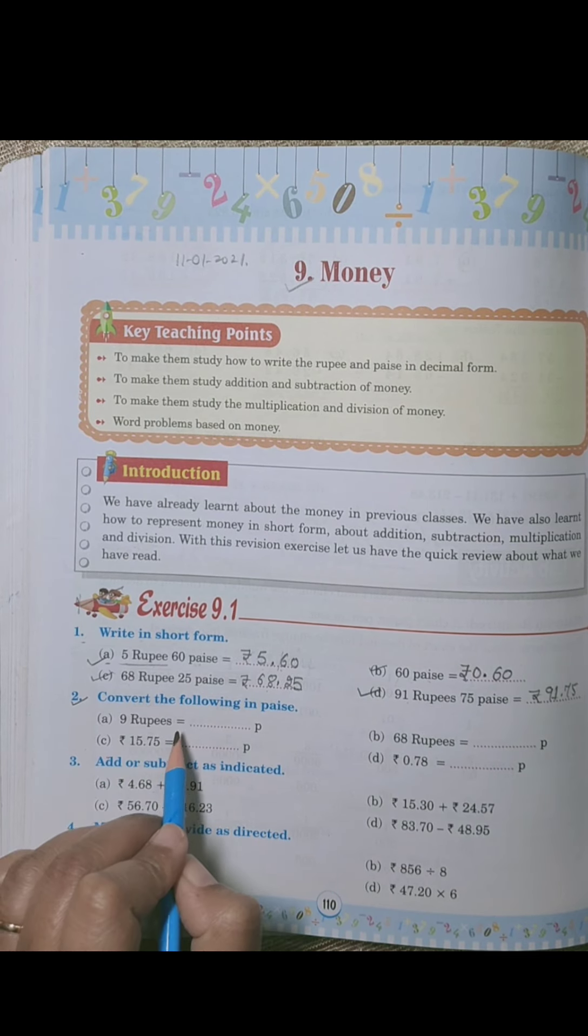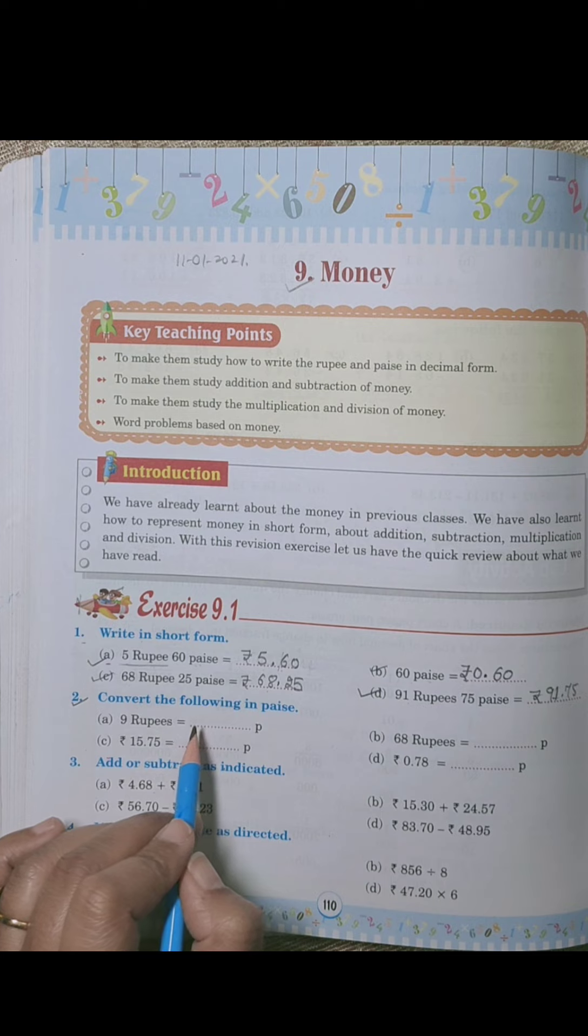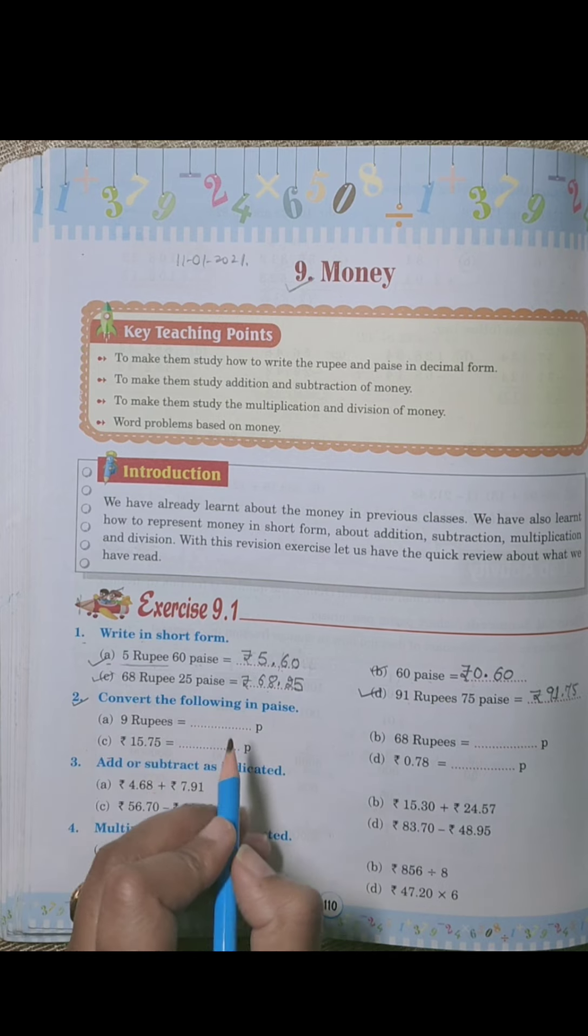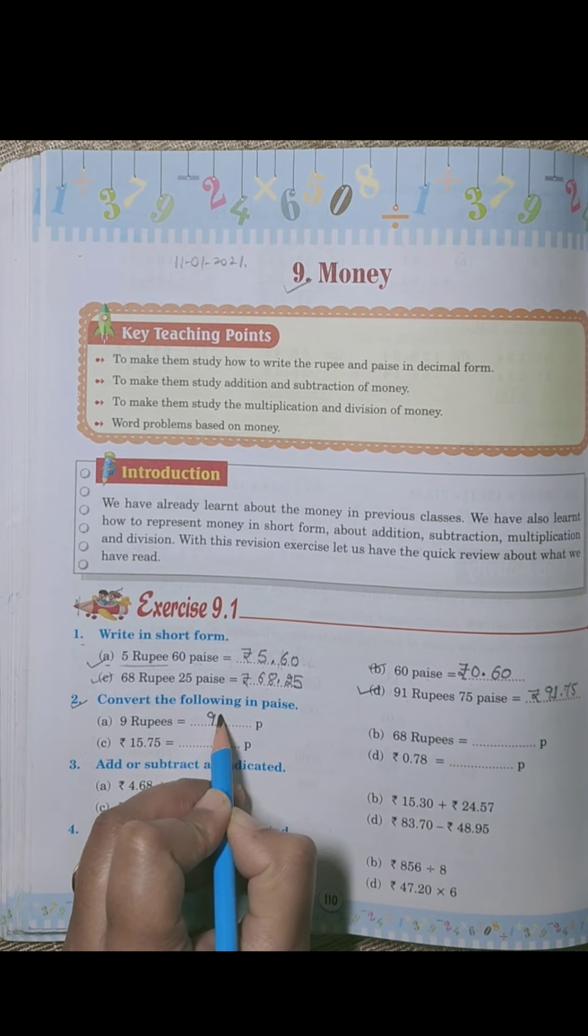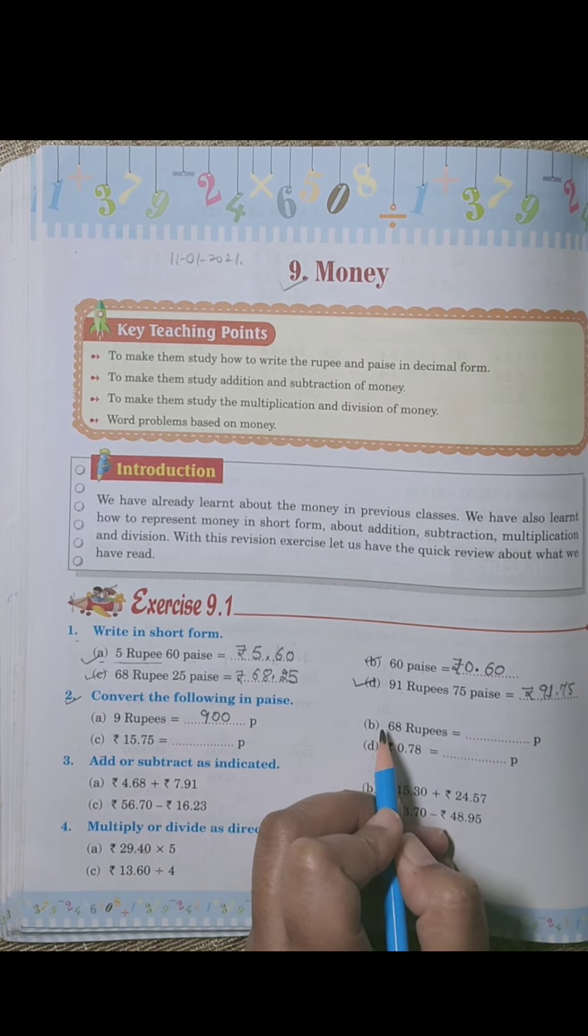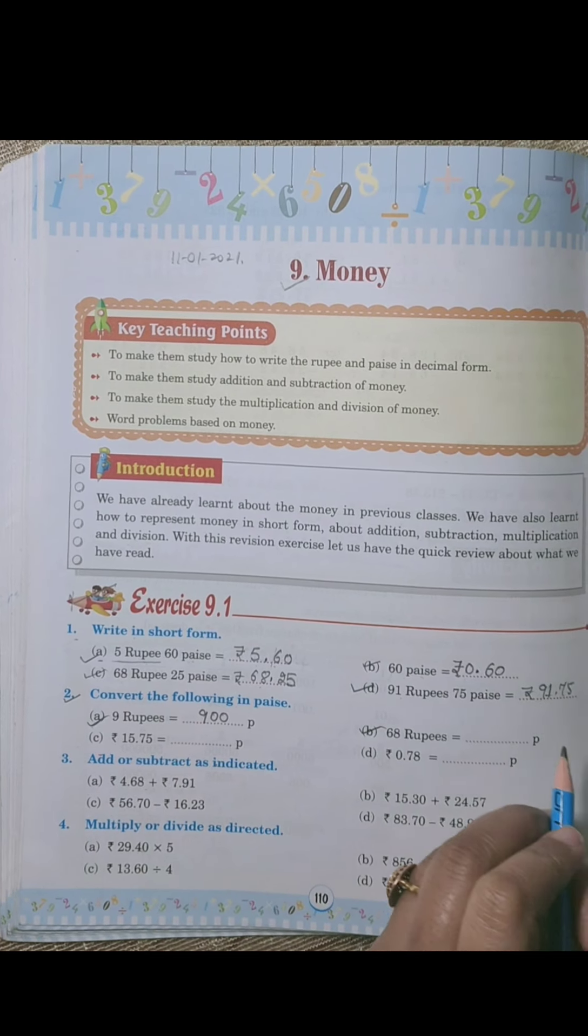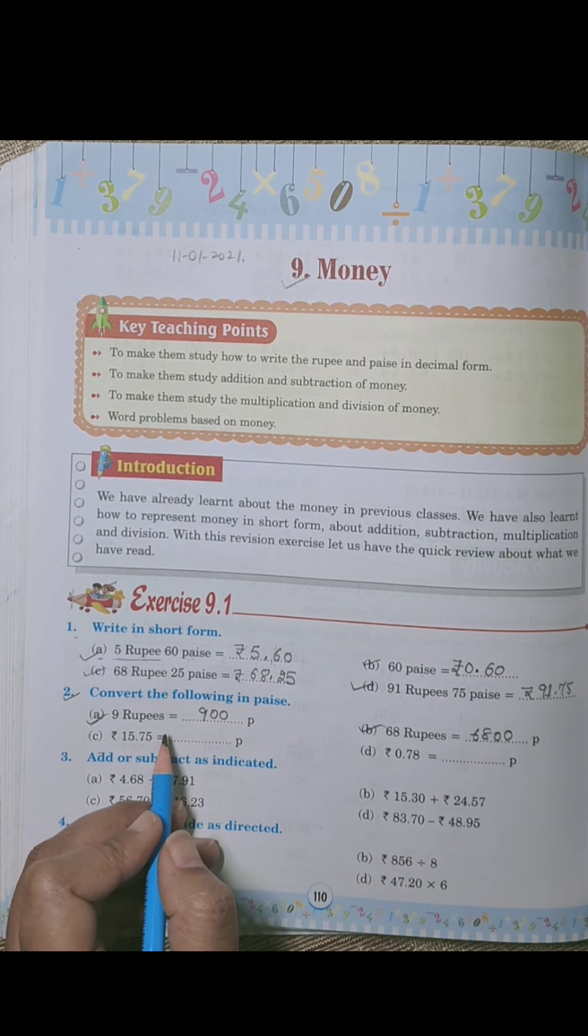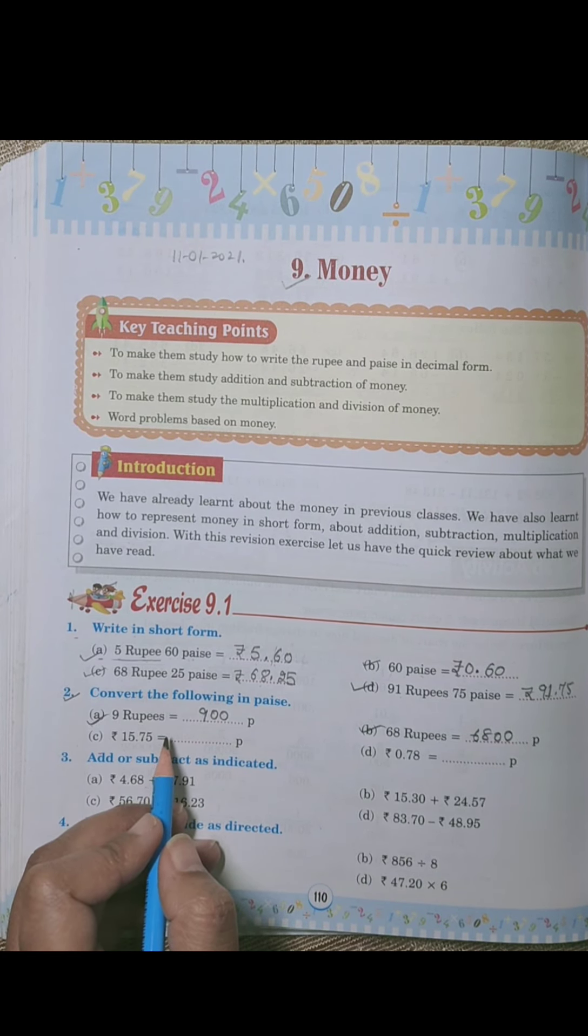Next, second is convert the following into paise. We need to convert this to paise. Part a: nine rupees equals dash. We know there are hundred paise in one rupee, so how many paise are in nine rupees? Nine into hundred means nine hundred paise, right? Next, b: 68 rupees means 68 hundred paise.